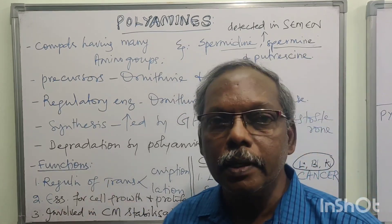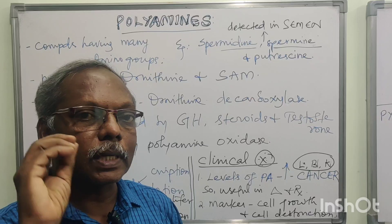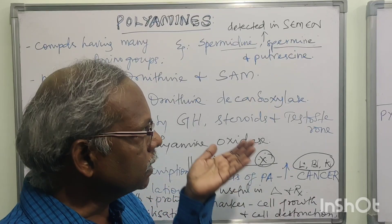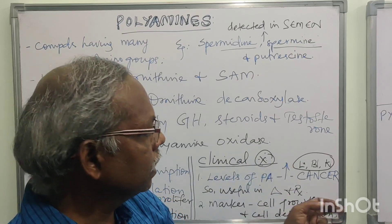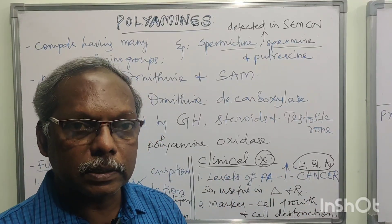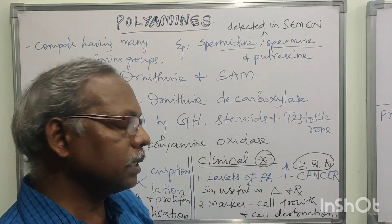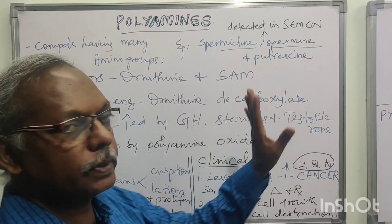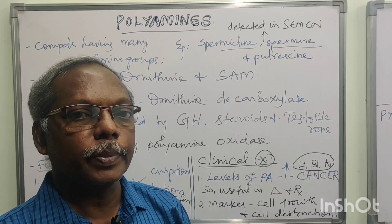These three are the important functions of polyamines. For clinical importance, don't forget to mention cancer. Polyamine synthesis is increased in all cancers — leukemia, lung cancer, kidney cancer, blood cancer, and so on. Levels of polyamines are increased in all cancers, which helps in the diagnosis and management of all cancers. It is also a marker for cell growth as well as cell destruction. These are the six or seven important points for MCQ pattern on polyamines in amino acid metabolism.